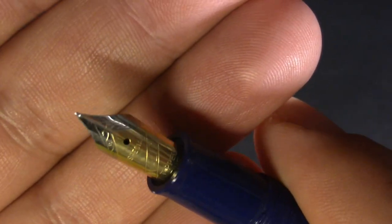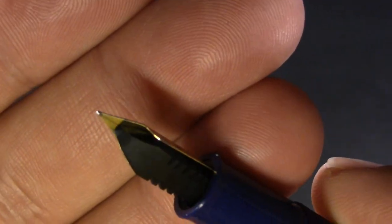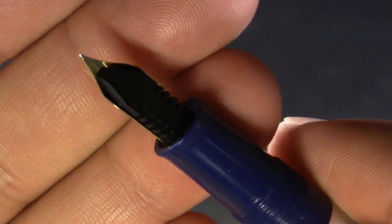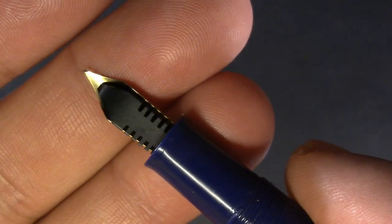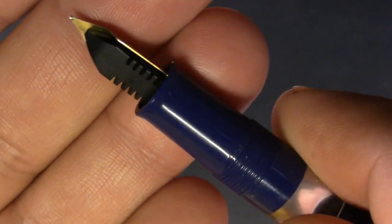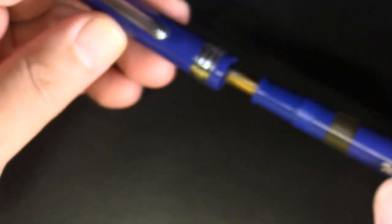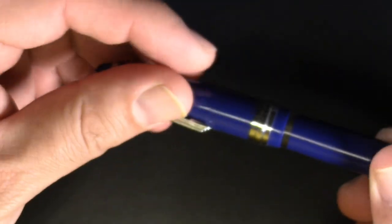Up here we have a Wality nib. Ebonite feed, very old fashioned. I want to say comb style, but I might be wrong about that name, but you know, old fashioned kind of style. Just a nice simple pen made in India.